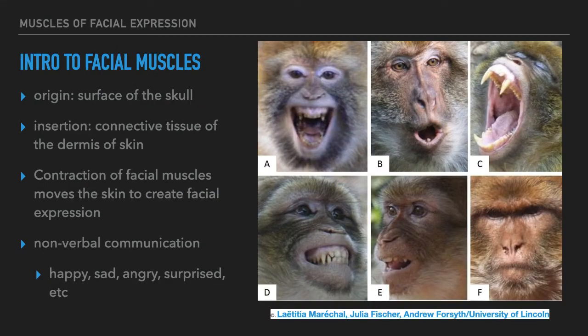Let's start with an introduction to facial muscles. Remember, muscles have an origin and an insertion point. The origin for facial muscles is most often the surface of the skull. The insertion point for most facial muscles is going to be the connective tissue of the dermis of the skin. Contraction of these facial muscles results in movement of the skin to create facial expressions.